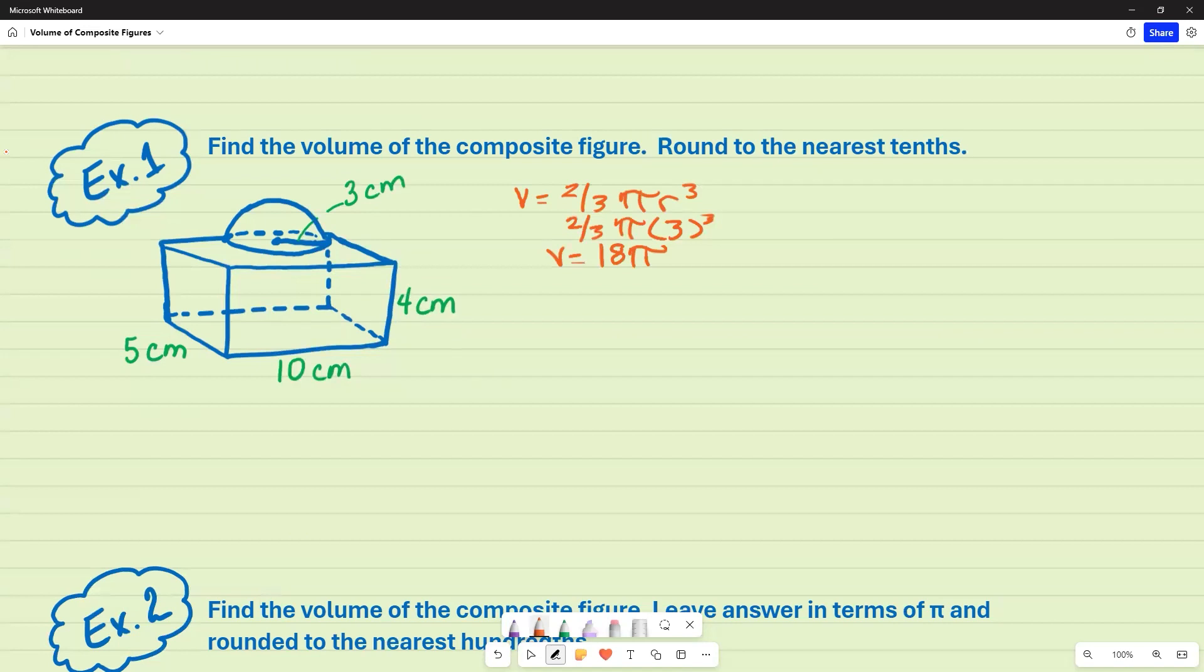We're asked to round it to the nearest tenths, but we're going to wait until the end once we combine both of the volumes. So this was for the hemisphere. So the next one is for the rectangular prism. And that formula is going to be length times width times height. And for this one, I'm just going to use five times 10 times four.